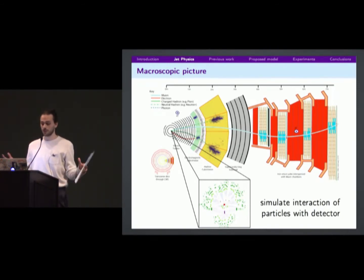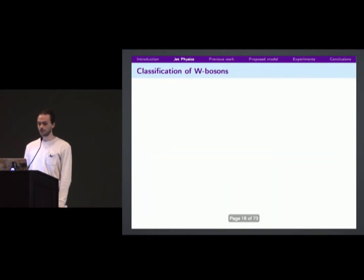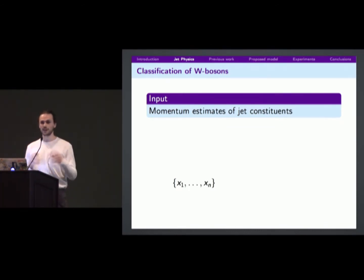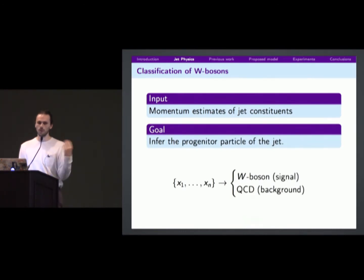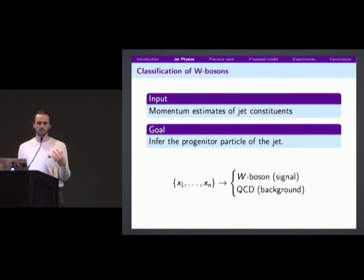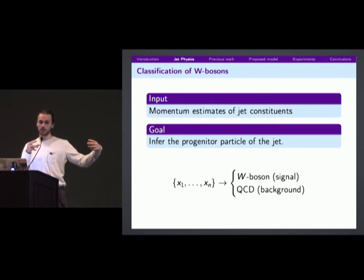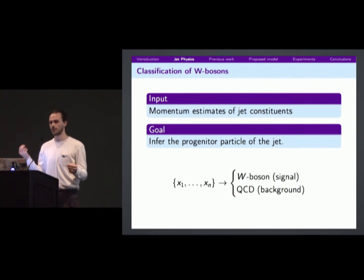Given that, we have a bunch of input-output pairs. The specific problem we're looking at is classification of W bosons. The input is the set of jet constituents — the momentum estimates — a collection of N particles buried in the detector with measurements of their four-momenta. You want to infer what happened at the start: was it a W boson, or quark/gluon QCD background? There are roughly 1,000 background events for every W boson.